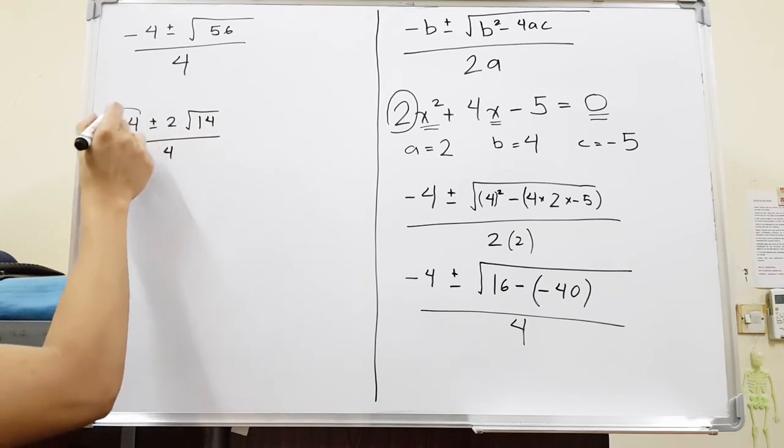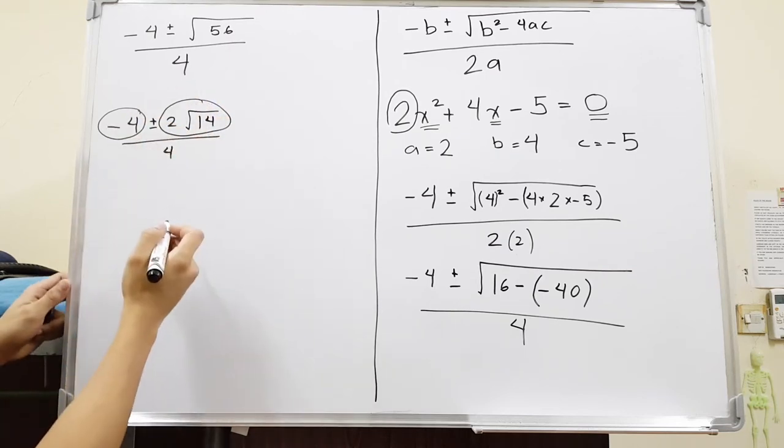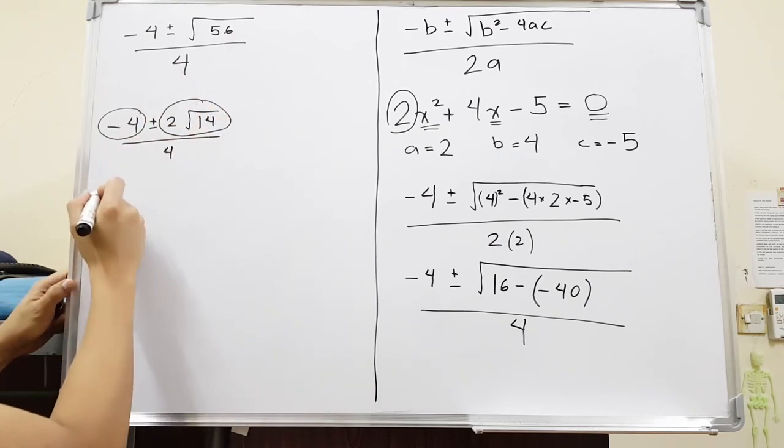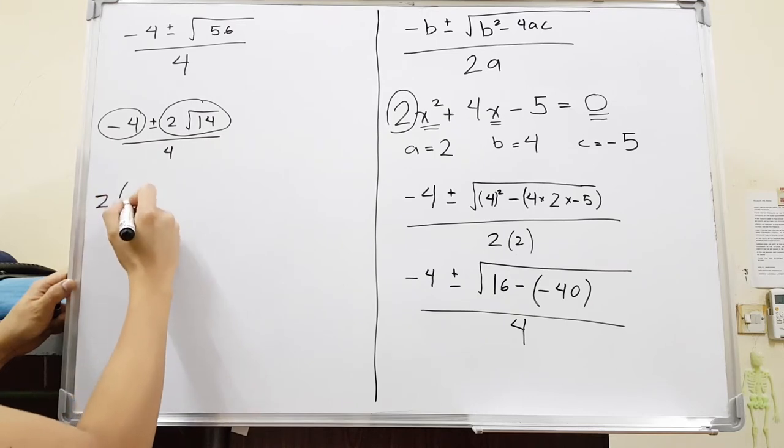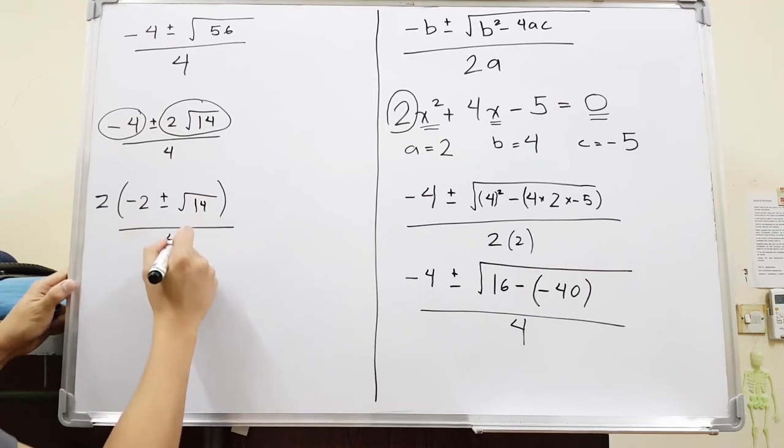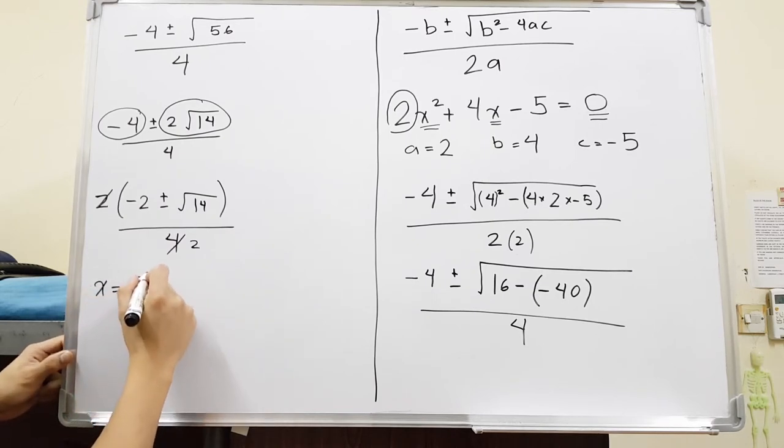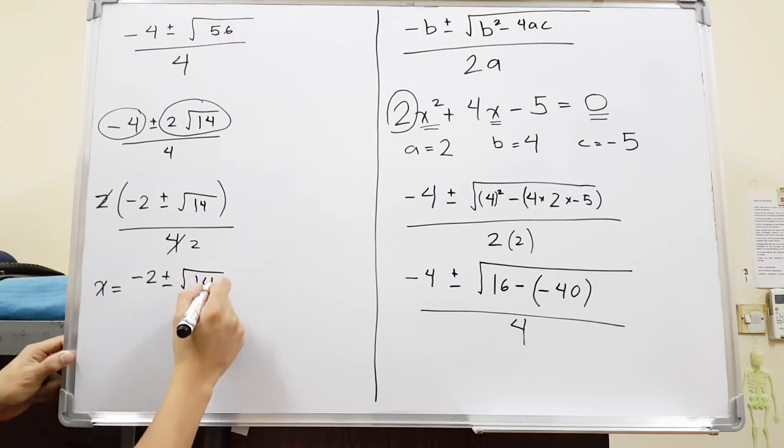And then we can still simplify. There's a common factor between this term and this term. We have a common factor of 2 or negative 2, but I'll just put 2 outside. So I will have negative 2 plus and minus square root of 14 all over 4. And we can simplify 2 and 4, this will just be 2. So our final answer will be x is equivalent to negative 2 plus and minus square root of 14 all over 2.